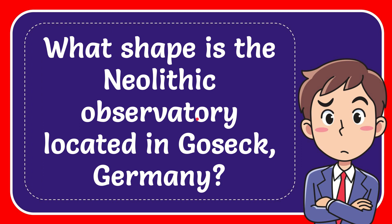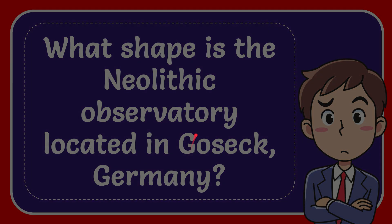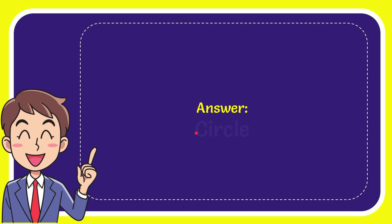In this video I'm going to give the answer for this question. The question is: what shape is the Neolithic observatory located in Gosseck, Germany? The answer for the question is circle. What is the answer for the question? Circle.